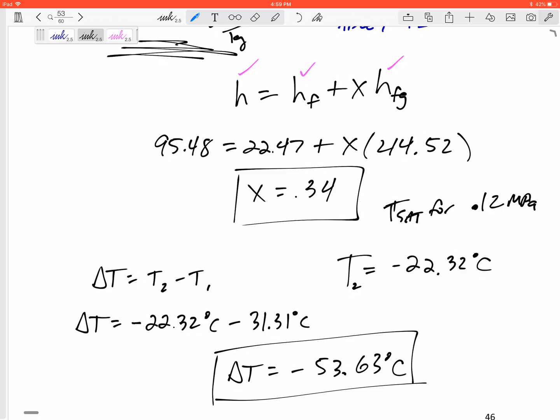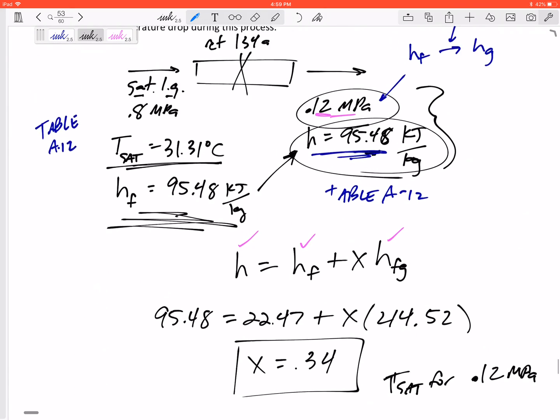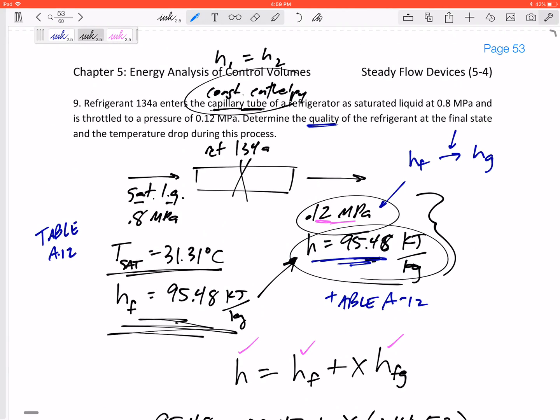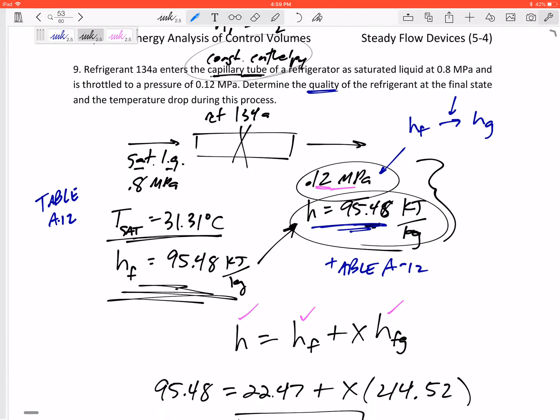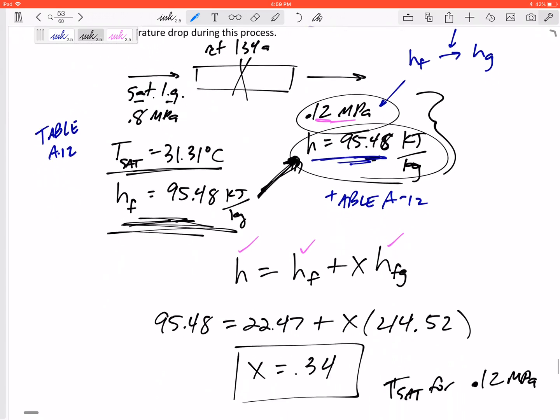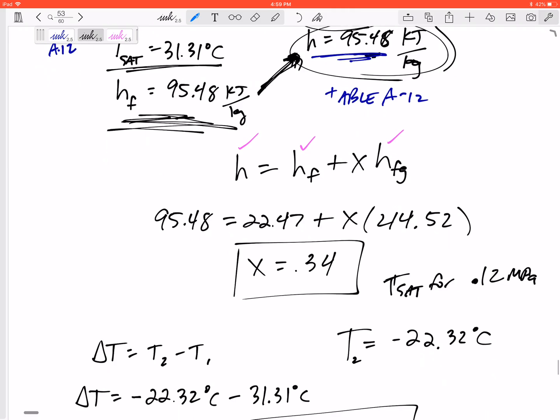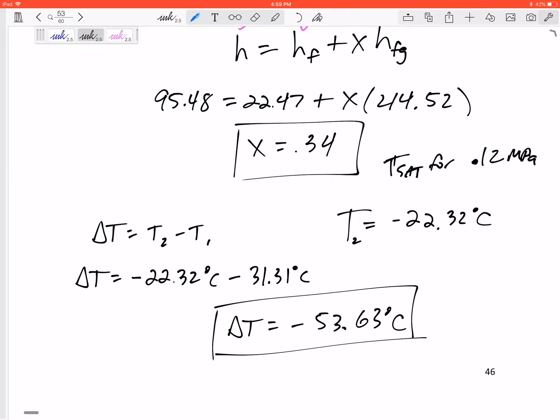Okay, so for a capillary tube or throttling valve type problem, you've got to know that it's constant enthalpy. That allows you to take the enthalpy that you found for the inlet and say that's the same enthalpy for the outlet. Then take that enthalpy and fill in any other properties you might want to find for the outlet—get this quality, get this delta T for the change in temperature.